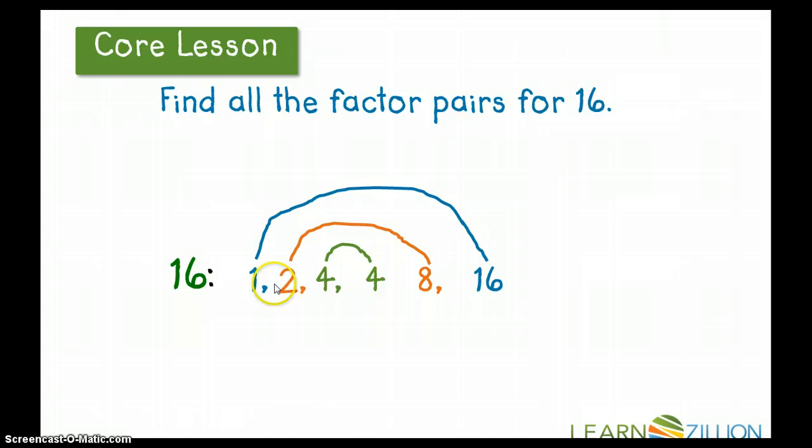Sometimes, whenever we're writing factor pairs, we don't always have to repeat the same number. I would only need to write this number four one time, whenever I'm listing the factor pairs for sixteen. And sometimes, whenever we see the factors that are repeating itself, we call those a square.